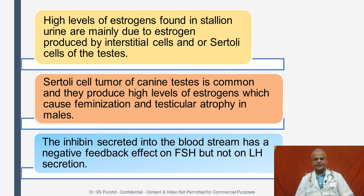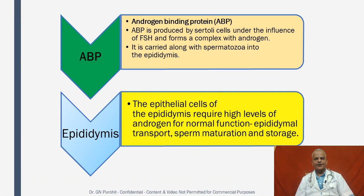Inhibin secreted into the bloodstream has a negative feedback effect on FSH but not on LH secretion. Androgen binding protein is produced by Sertoli cells under the influence of FSH and forms a complex with androgen. It is carried along with spermatozoa into the epididymis. The epididymal cells require higher levels of androgen for normal function, and the epididymis is responsible for sperm transport, maturation, and storage.